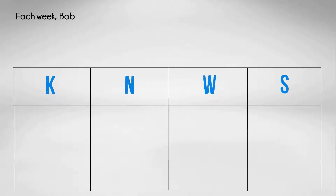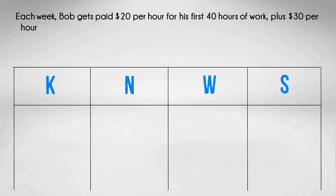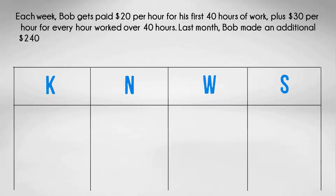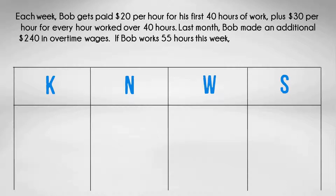Let's take a sample question and see how the graphic organizer works. Each week Bob gets paid $20 per hour for his first 40 hours of work, plus $30 per hour for every hour worked over 40 hours. Last month, Bob made an additional $240 in overtime wages. If Bob works 55 hours this week, how much will he earn?